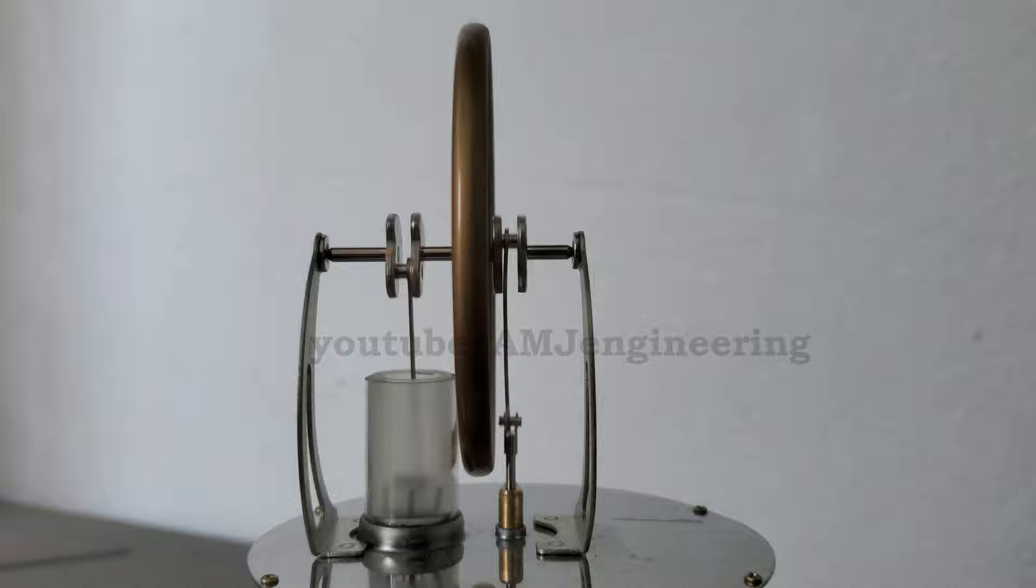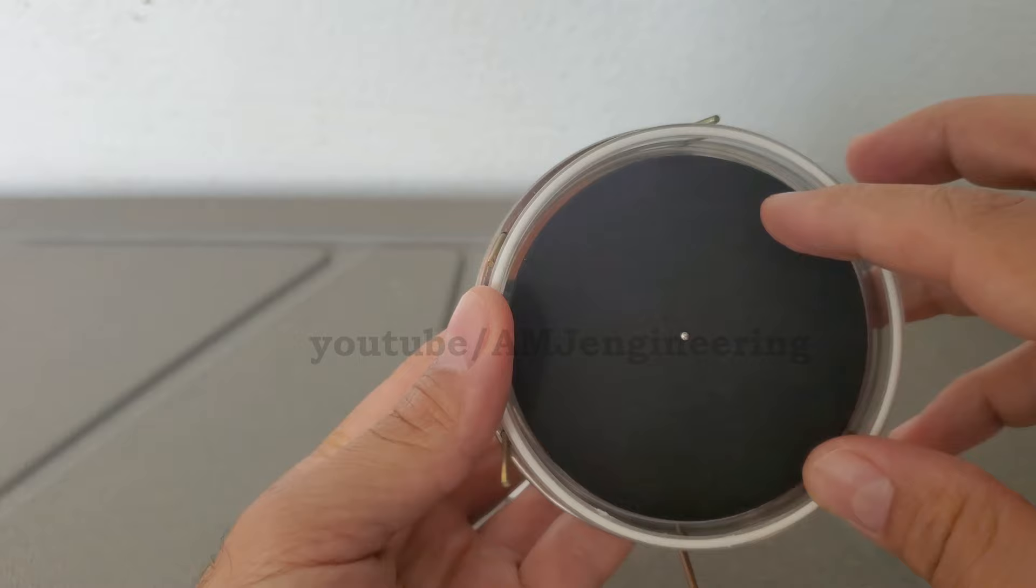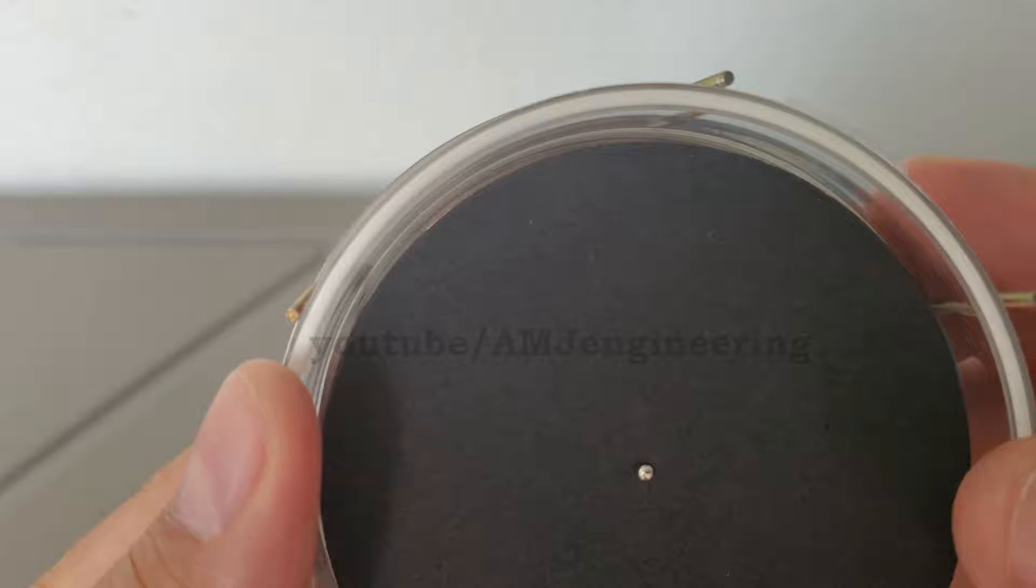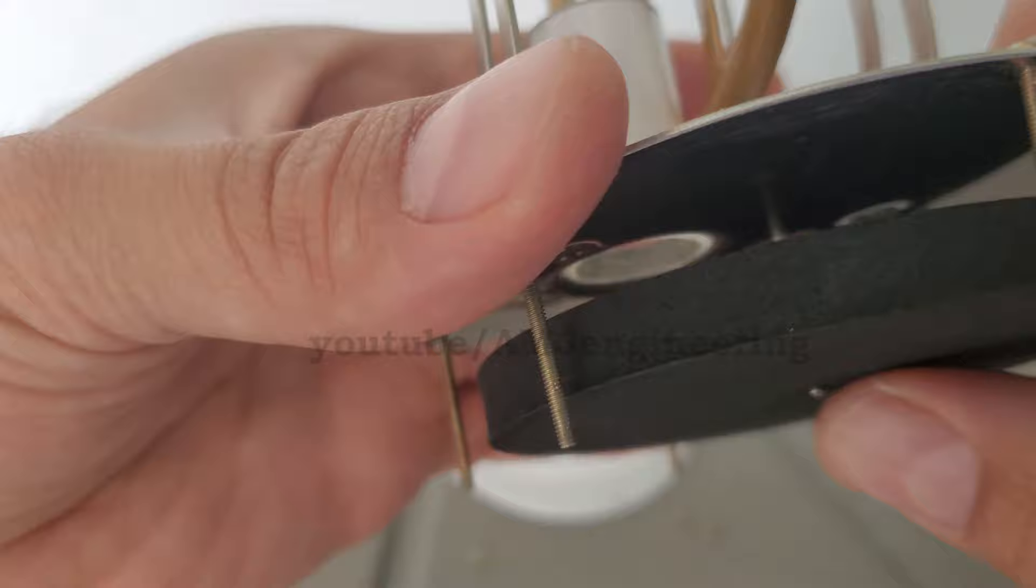In a Stirling engine, there's one completely internal piston called a displacer whose job is to move the gas between the heat source and the heat sink. Unlike a normal piston in a steam engine, the displacer fits very loosely with a little room to spare between the edge of the piston and the wall of the cylinder, and the gas flows around the outside of it as it moves back and forth.